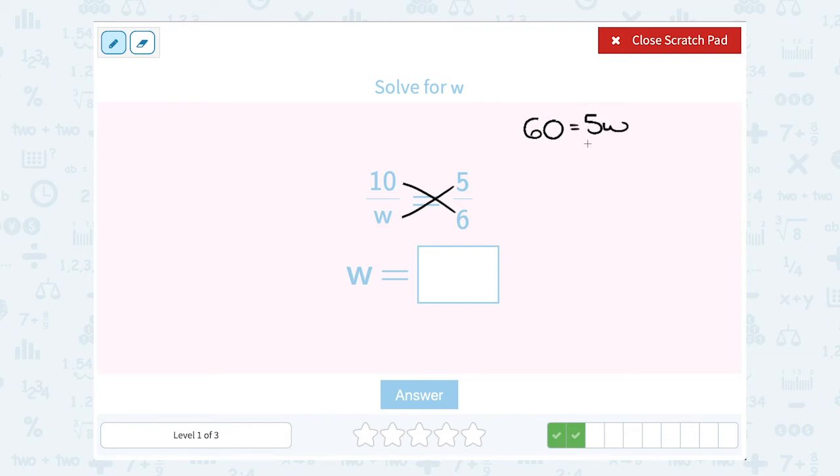Now we want to solve for w. Since w is being multiplied by 5, next to means multiplication, our opposite or inverse is to divide by 5. And then 60 divided by 5 gives me 12. And on this side, multiply and divide by the same number cancels out and leaves me with w. So 12 is equal to w.